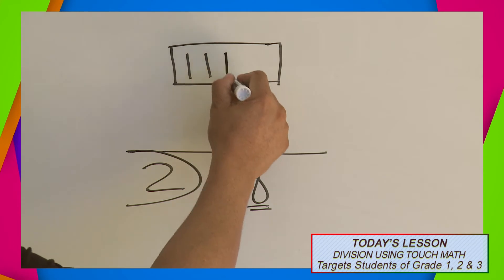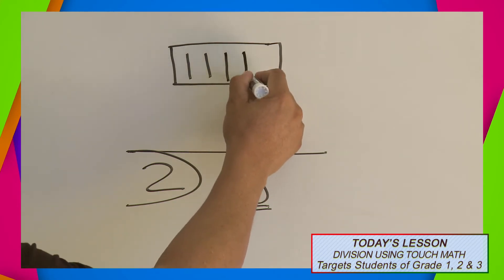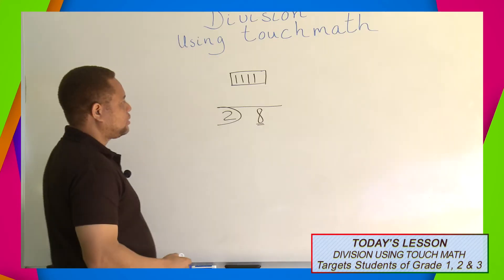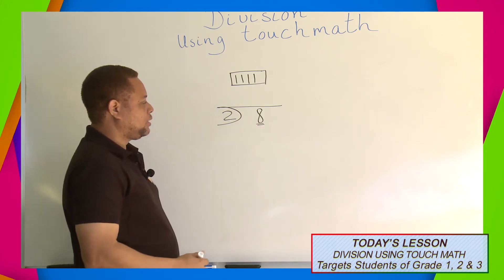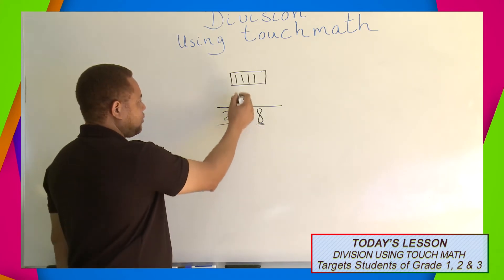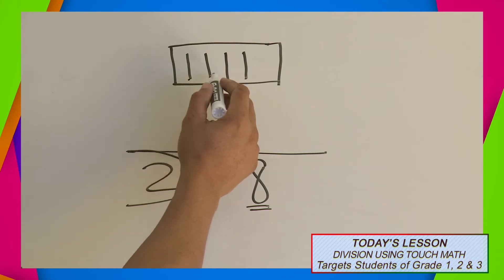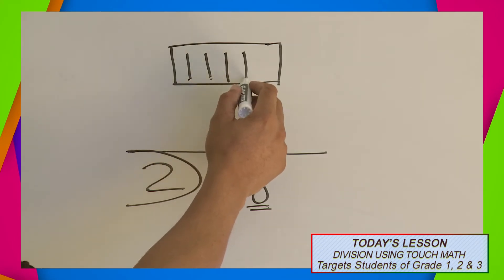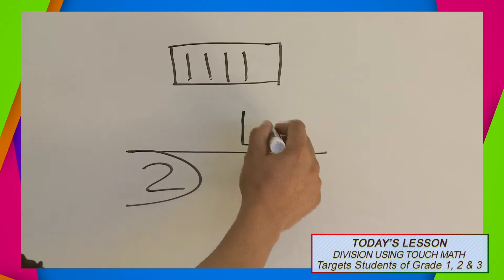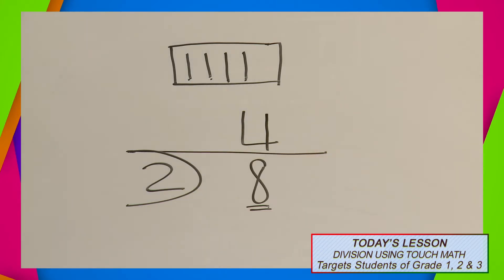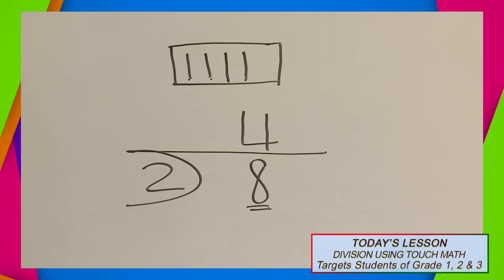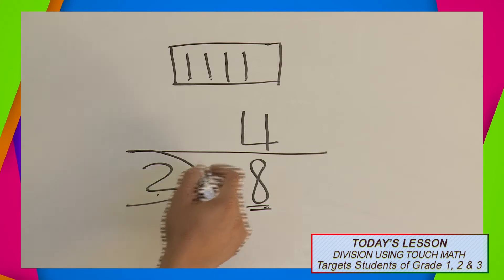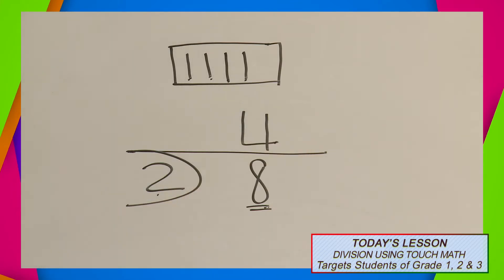4, 6, 8. We got to 8, and now I'm going to count the tally marks: 1, 2, 3, 4, and I will put 4 here. So 4 is my answer, and 4 is what we call the quotient. So now we can say 8 divided by 2 equals 4, and that's it for our first example.